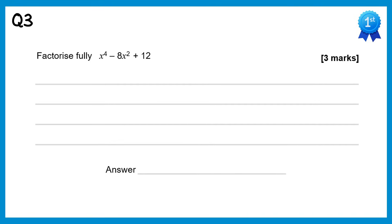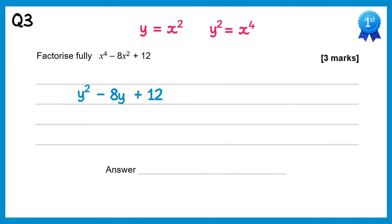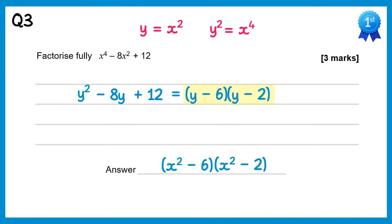For this question we need to make a substitution: y equals x squared. And also, squaring both sides gives y squared equals x to the 4. We can now replace x to the 4 with y squared, the negative 8x squared becomes negative 8y, and then plus 12. This factorises to give y minus 6 times y minus 2. We then use the substitution to replace the y's with x squared, so y minus 6 becomes x squared minus 6, and y minus 2 becomes x squared minus 2.